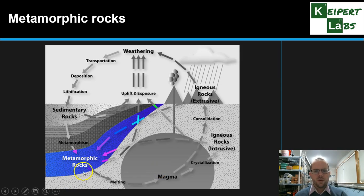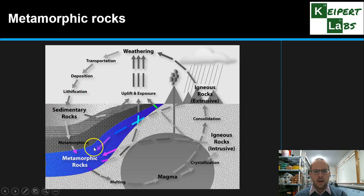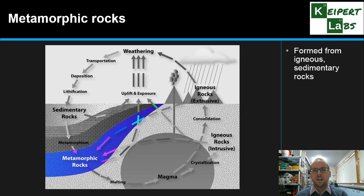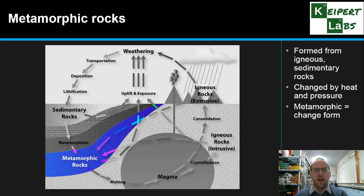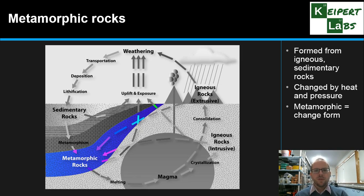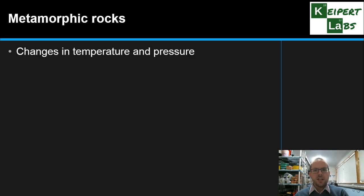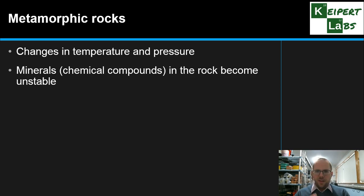Now we're going to look at metamorphic rocks — the blue band on the left of the diagram. There are lots of arrows pointing towards this metamorphic band, because metamorphic rocks form from both igneous and sedimentary rocks that become changed by heat and pressure. The word metamorphic comes from metamorphosis, meaning change of form — just as a caterpillar undergoes metamorphosis into a butterfly. Changes in temperature and pressure cause the minerals inside the rock to become unstable and begin changing.